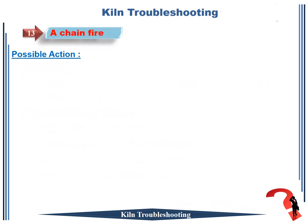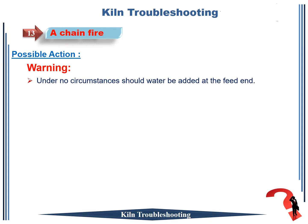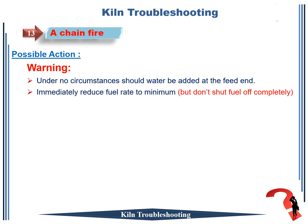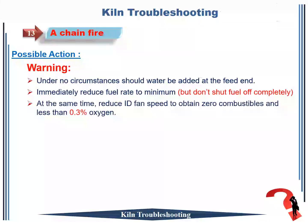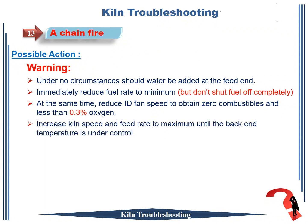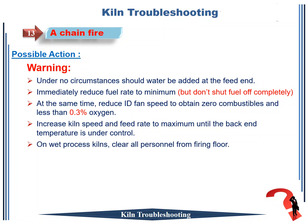Possible action to take. WARNING: 1. Under no circumstances should water be added at the feed end. 2. Immediately reduce fuel rate to minimum, but do not shut fuel off completely. 3. At the same time, reduce ID fan speed to obtain zero combustibles and less than 0.3% oxygen. 4. Increase kiln speed and feed rate to maximum until back end temperature is under control. 5. On wet process kilns, clear all personnel from firing floor.